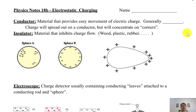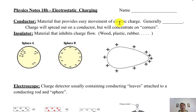Physics notes, unit 18b: electrostatic charging — basically moving charges around. How do we detect and create charges? You're not really creating charges, you're moving them around. We have basically two types of materials: conductors and insulators. A conductor is a material that provides easy movement of electric charge — generally anything metal.